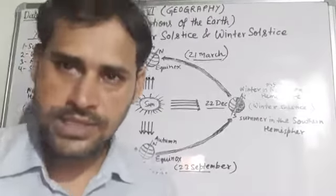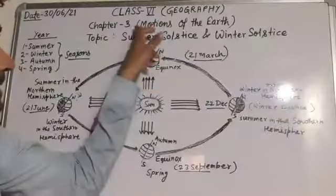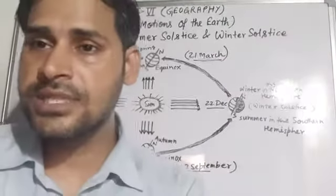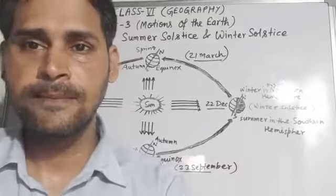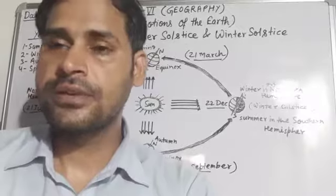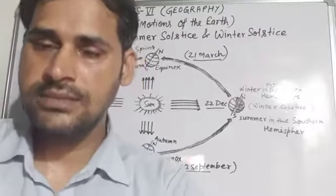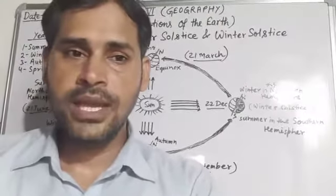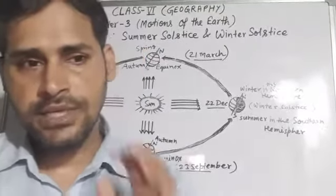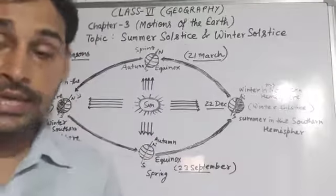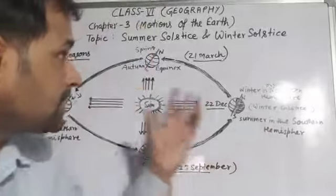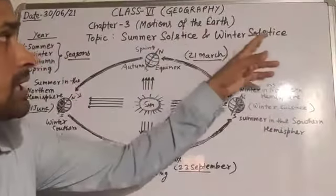Hello students, today we will study Class 6th Geography, Chapter 3, Motions of the Earth. Our topic is Summer Solstice and Winter Solstice. In the previous topic, we discussed rotation, revolution, orbital plane, leap year, elliptical orbit, and the Circle of Illumination. So here we will understand Summer Solstice and Winter Solstice.